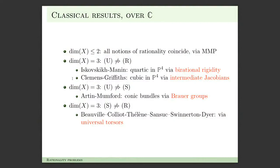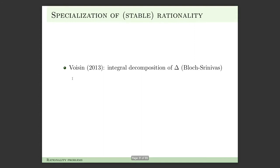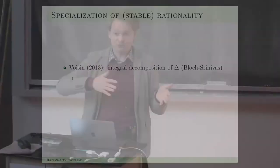There was a breakthrough in 2013. Voisin discovered that integral decomposition of the diagonal provides a very powerful approach to proving failure of stable rationality for varieties for which all previous obstructions — birational rigidity, intermediate Jacobians, Brauer group — vanish. You degenerate to a special fiber that is mildly singular and has some obstruction, for example non-trivial Brauer group or unramified cohomology as Claire just explained. Then that fact from the special fiber translates into failure of stable rationality for the very general fiber of the family.